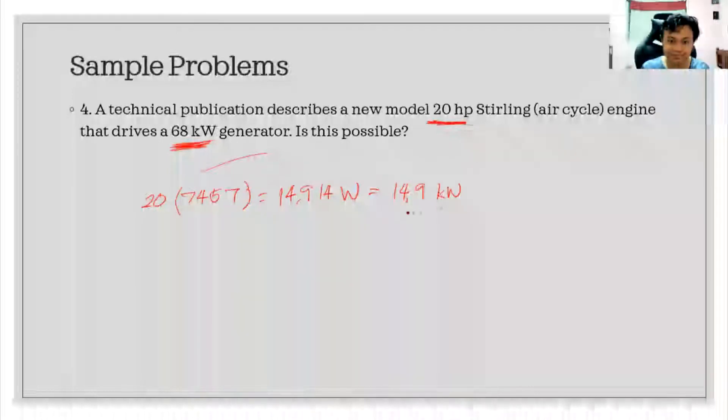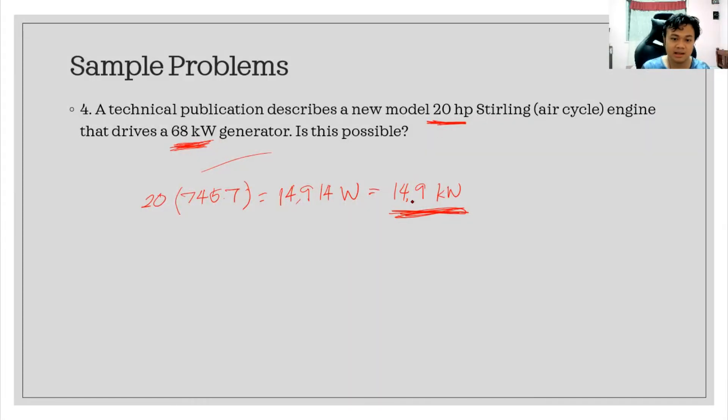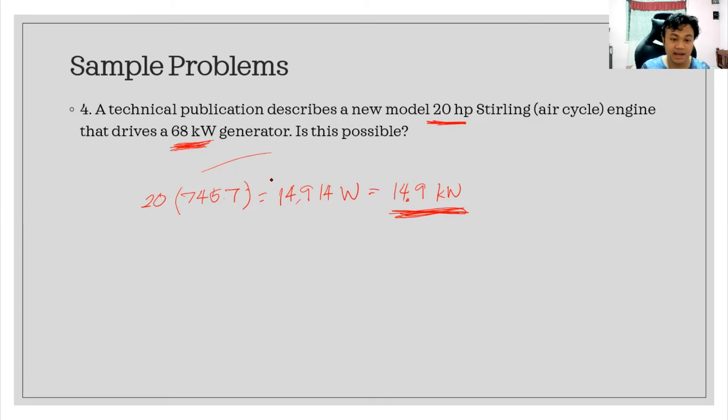As you can see, it's really not capable of driving this 68 kilowatt generator. It's not possible for this air cycle engine or Stirling engine to drive this generator because it's so lacking in power. Even at 100% capacity, it cannot supply this amount of power.